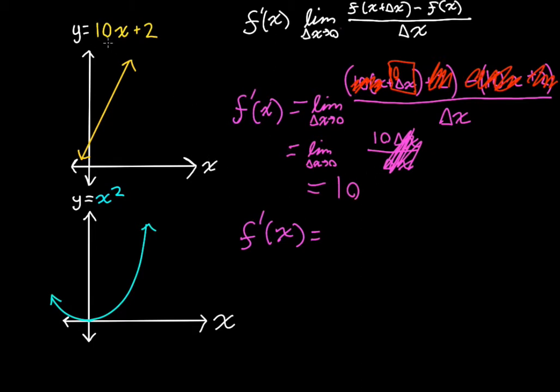So at any point along x, you'll know that the slope is 10. And we already know this, right? y is equal to mx plus b. It's a line. We know the slope is 10. But now we know that our understanding of derivatives works with a linear function.